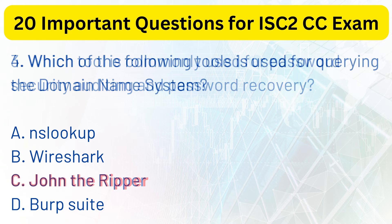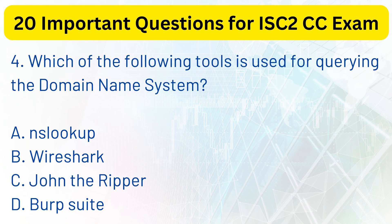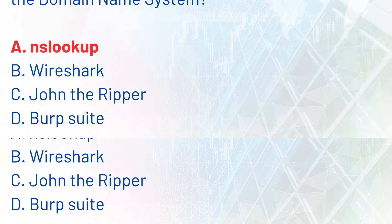Question 4. Which of the following tools is used for querying the domain name system? a. Nslookup. b. Wireshark. c. John the Ripper. d. Burp Suite. The correct answer is a. Nslookup.